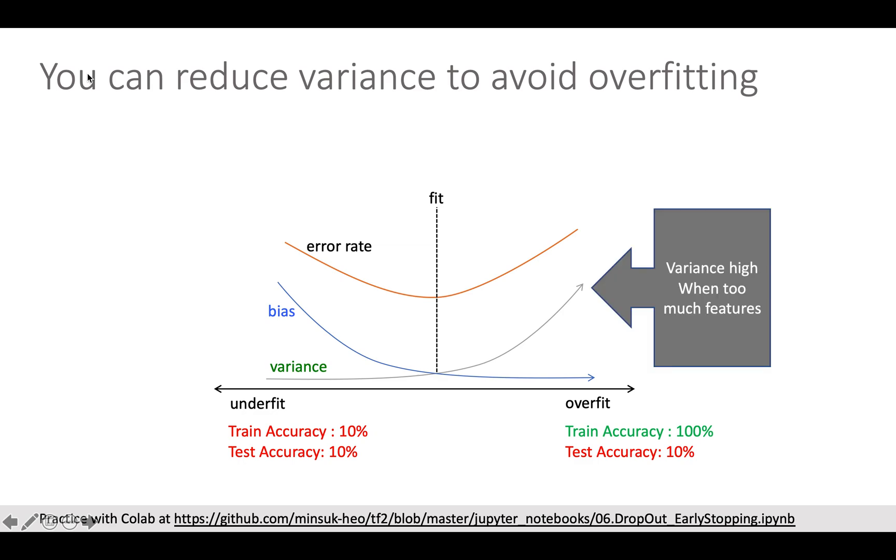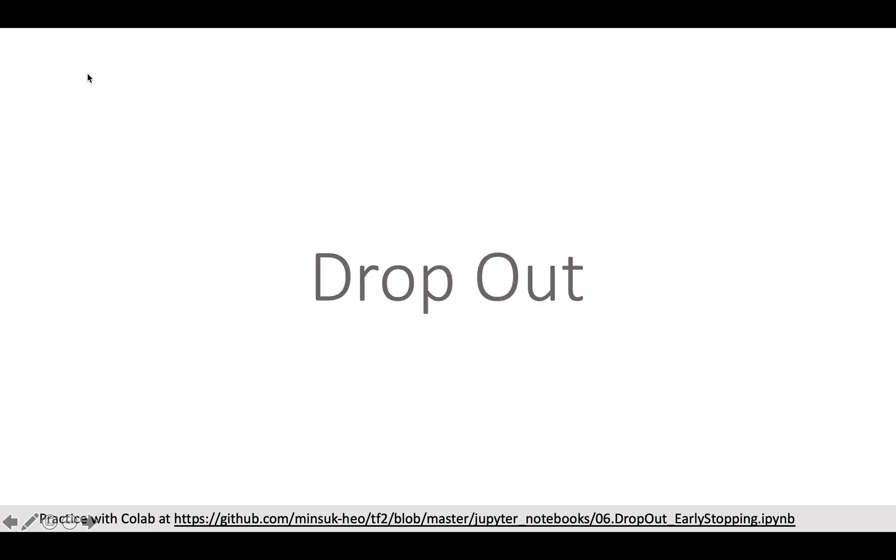When there are too many features, normally variance goes higher. Therefore, when your model is overfitted, we can come up with an idea to reduce features and that is the motivation of dropout.